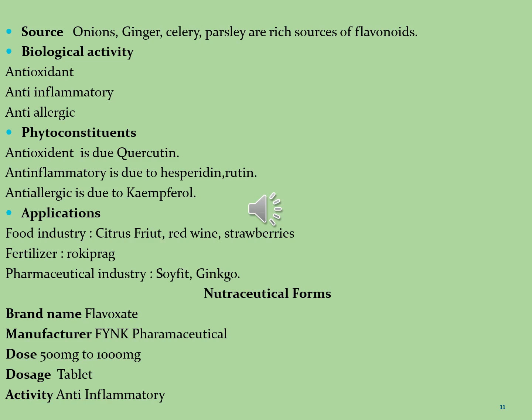The second molecule is kaempferol, isolated from apples, onions, leeks, citrus fruits, grapes, red wines and ginkgo biloba. It can be used as a strong antioxidant and helps prevent oxidative damage to cells, lipids and DNA. Kaempferol also seems to prevent arteriosclerosis by inhibiting the oxidation of low-density lipoproteins and the formation of platelets in the blood.